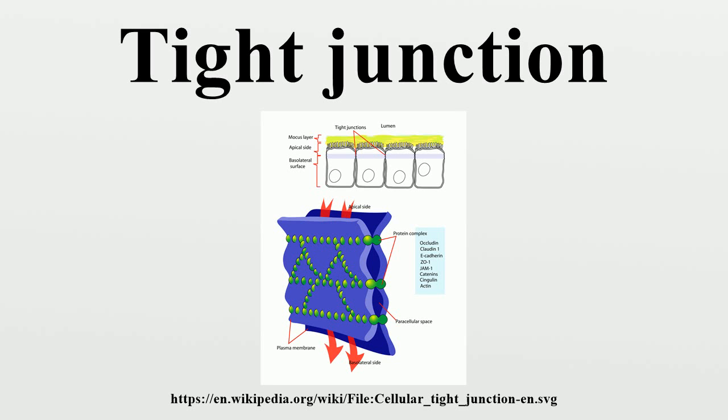Tight junctions are composed of a branching network of sealing strands, each strand acting independently from the others. Therefore, the efficiency of the junction in preventing ion passage increases exponentially with the number of strands.